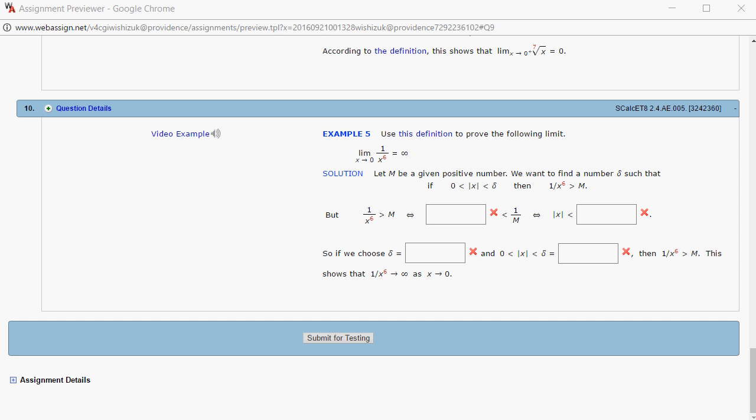Alright, let's look at homework 2.4 problem number 10. We want to use the definition to prove this limit: the limit of 1 over x to the 6th power as x approaches 0 is equal to infinity.